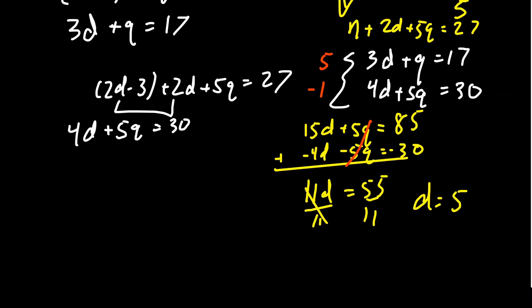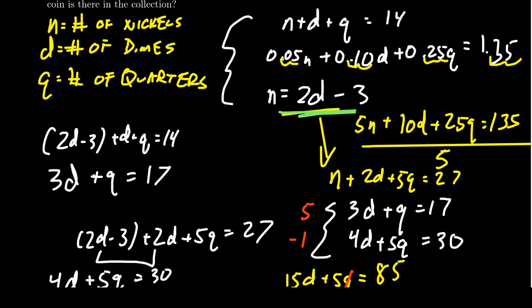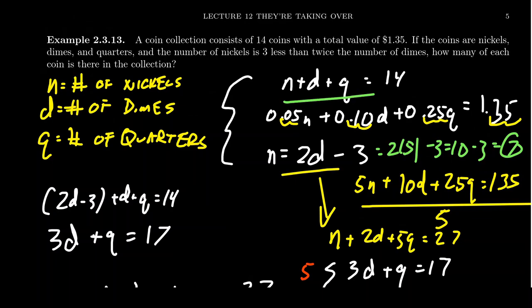Now we have to go back and find the other variables. We know d is 5. Remember that n equals 2d minus 3, so n equals 2 times 5 minus 3, which is 7. Then I go back to the original equation: 7 nickels plus 5 dimes plus q equals 14. So q equals 14 minus 7 minus 5, which equals 2.